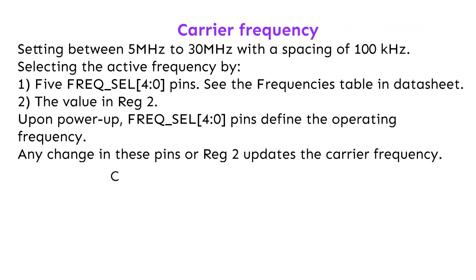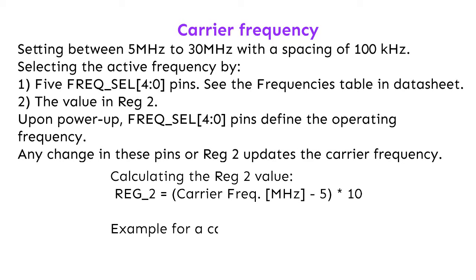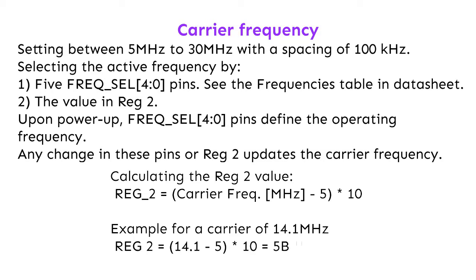To calculate the reg 2 frequency value: reg 2 equals the carrier frequency in MHz minus 5, multiplied by 10. For example, for a carrier of 14.1 MHz: reg 2 equals (14.1 minus 5) multiplied by 10, which equals 0x5B hex.